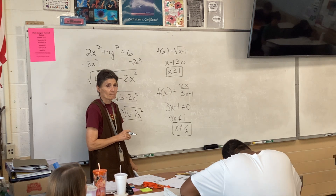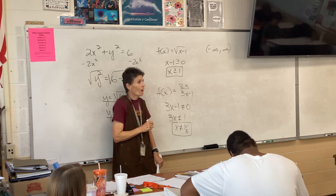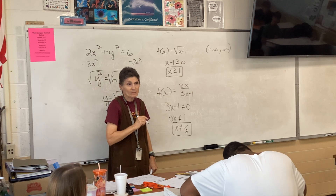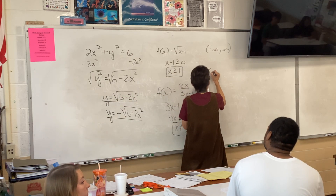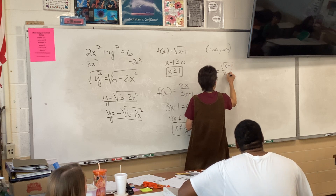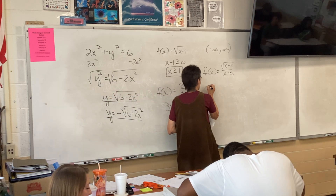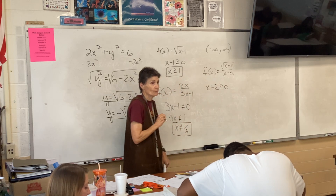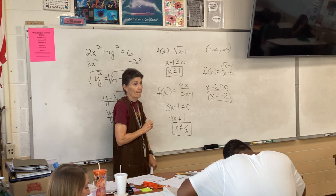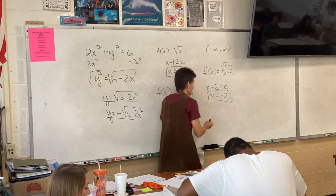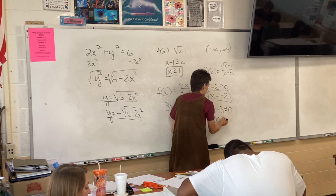Part c: all real numbers — you can write it that way or say all real numbers. Why? We don't have a denominator and we don't have a radical, so we don't have any issues. The last one has two issues: it has a radical, so x + 2 ≥ 0, meaning x ≥ -2. It also has a denominator, which means x - 3 cannot be zero, so x cannot be 3.